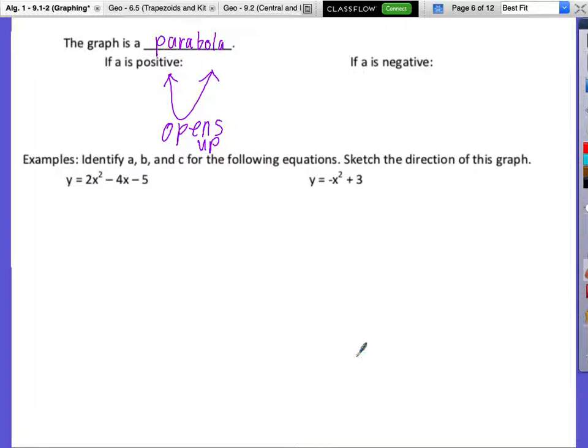Whenever A is positive, it opens up. Conversely, on the opposite side, whenever A is negative, our leading coefficient is negative, it opens down. We call that an upside down U.